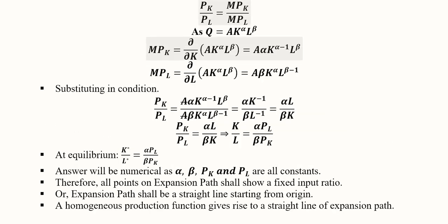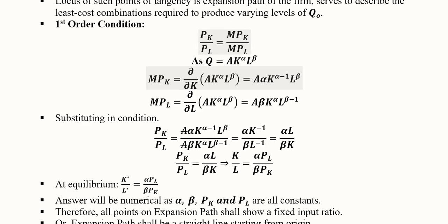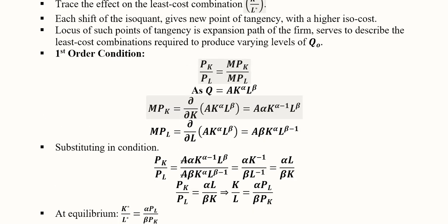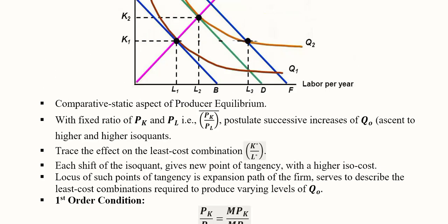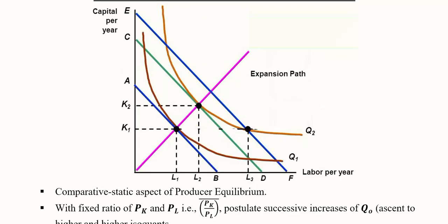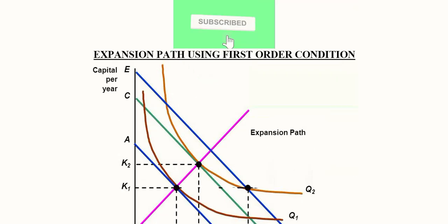So this was about the expansion path which was a straight line. This was the mathematical evidence of it. This was a little bit of explanation. And this is the diagram of the producer's equilibrium using which we have understood how the first order condition from calculus can be used to mathematically understand this concept and make it concrete. Thank you.